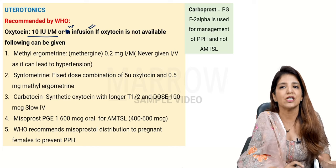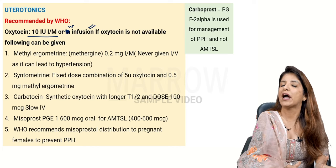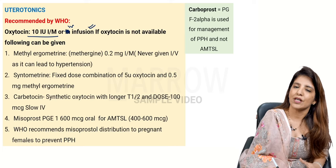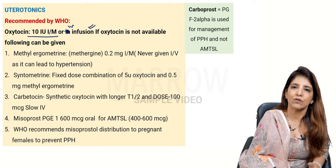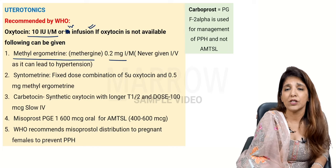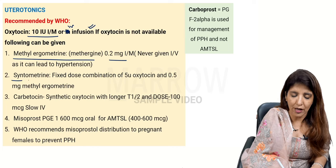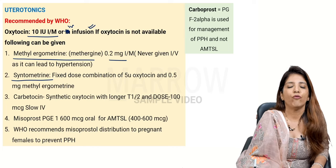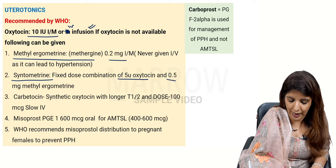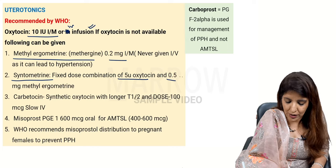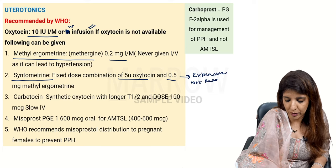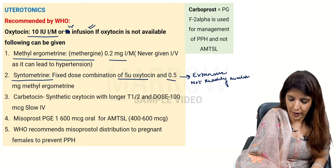When given IM, the action lasts for three hours; when given by IV infusion, action stops after one hour. If oxytocin is not available, alternative drugs include methyl ergometrin at a dose of 0.2 mg IM — not IV, as that leads to severe hypertension. A third option is syntometrin, a fixed-dose combination of oxytocin 5 IU and methyl ergometrin 0.5 mg, though it is expensive and not readily available. You can also use carbytocin.